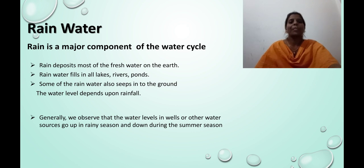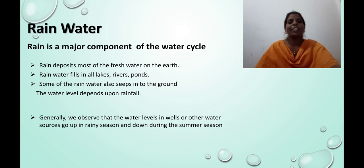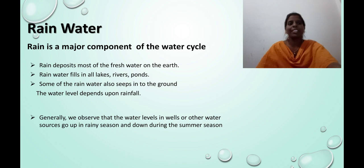Rain is a major component of the water cycle. Rain deposits most of the fresh water on the earth. Rain water fills all lakes, rivers, and ponds. Some of the rain water also seeps into the ground. The water level depends upon rainfall. Generally, we observe that the water levels in wells or other water sources go up in rainy season and down during the summer season.